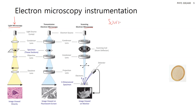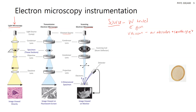The electron source is typically a heated tungsten filament, referred to as an electron gun. It's critical that this entire system operates in vacuum, because air absorbs and scatters electrons — electrons have a very low path length in air. This is one of the key limitations, especially in biophysics where samples naturally exist in aqueous solution.